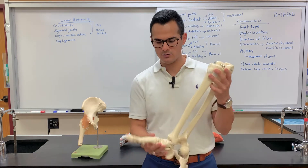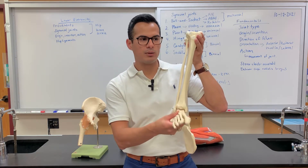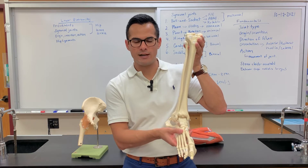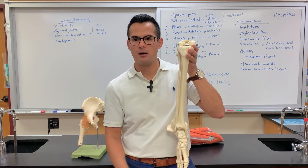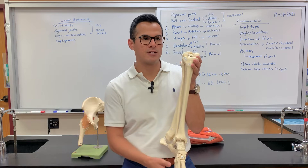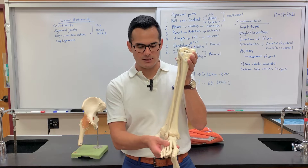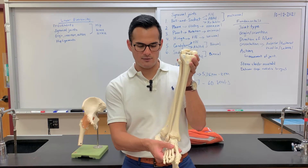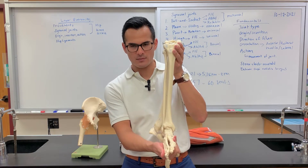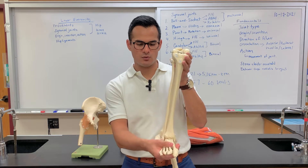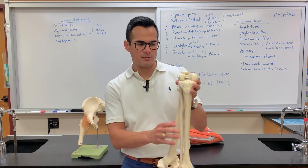Down here at the ankle, if you go in this direction it is plantar flexion, and bringing it back upwards is dorsiflexion — because you're flexing the dorsum of the foot. The bottom is known as the plantar surface, which is why we call it plantar flexion. The two other movements are inversion, when the gap is larger on the inside, and eversion, when the gap is more towards the outside.